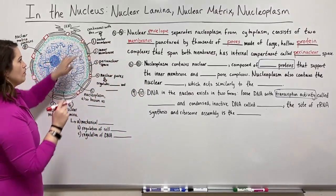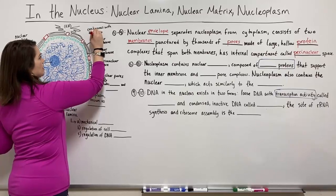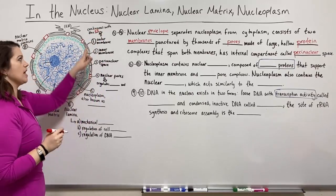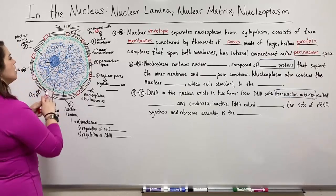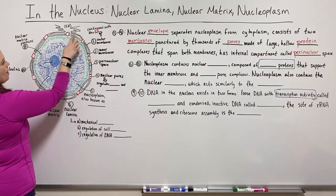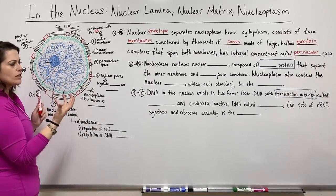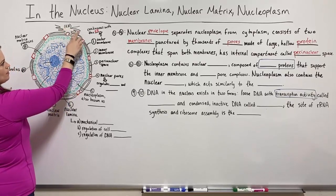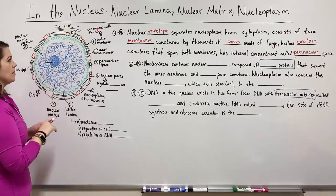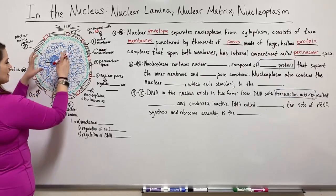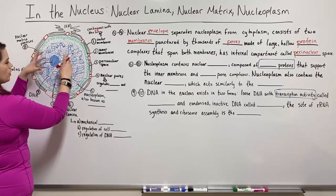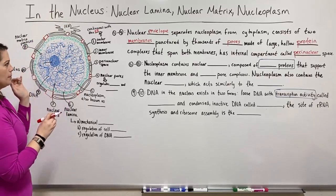The outer membrane is continuous with the endoplasmic reticulum, which I'm abbreviating as ER. I've drawn that here. That outer membrane is continuously connected to the membrane system that makes up the endoplasmic reticulum, which is another way in which things can travel from the nucleus into the endoplasmic reticulum.